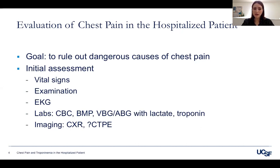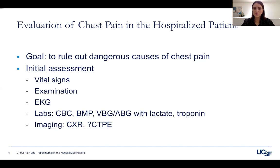An EKG can show ischemic changes, and you can get basic labs including a troponin to look for myocardial infarction or ischemia. Chest x-ray is usually helpful, and you can consider a CT angiogram to look for pulmonary embolism if that's high on your list.